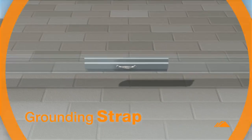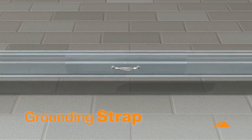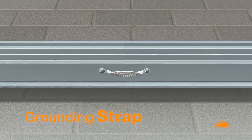The grounding strap combines with a rail splice to structurally and electrically bond two segments of rail.